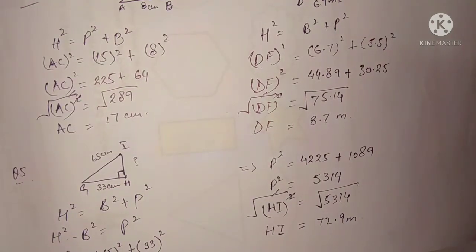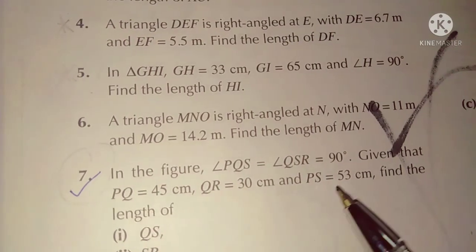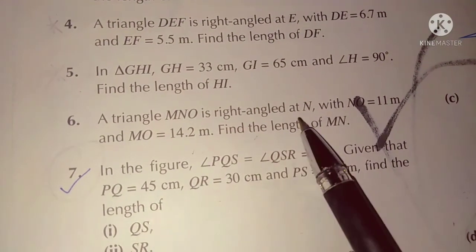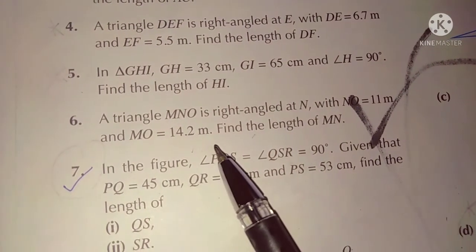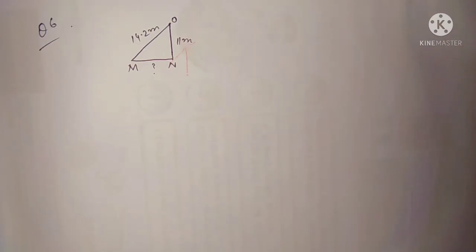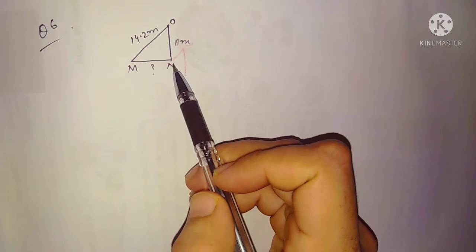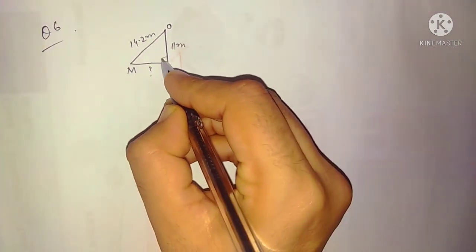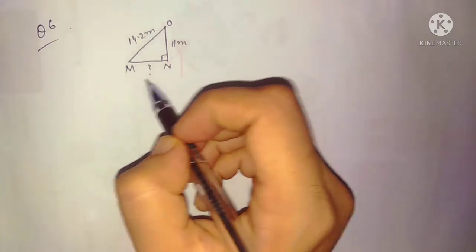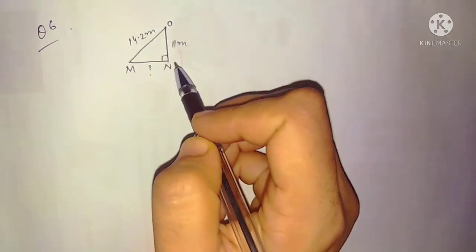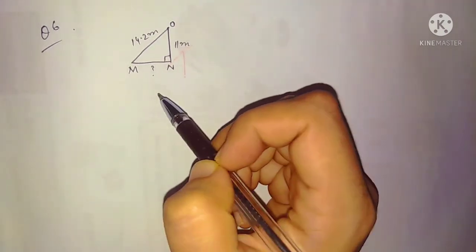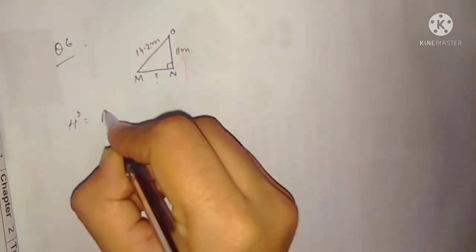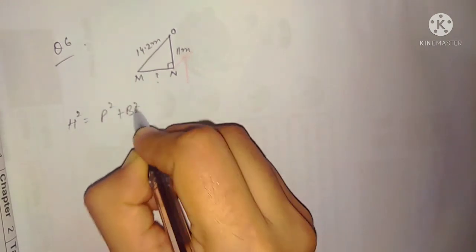Question number six: triangle MNO is right angle at N. NO is equal to 11 meters and MO is equal to 14.2 meters. Find the length of MN. The 90-degree angle is at N. MO is your hypotenuse, which is 14.2, and NO is 11 meters. You have to find the base, which is MN.